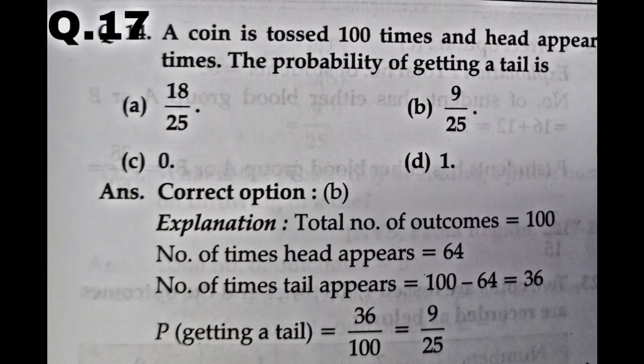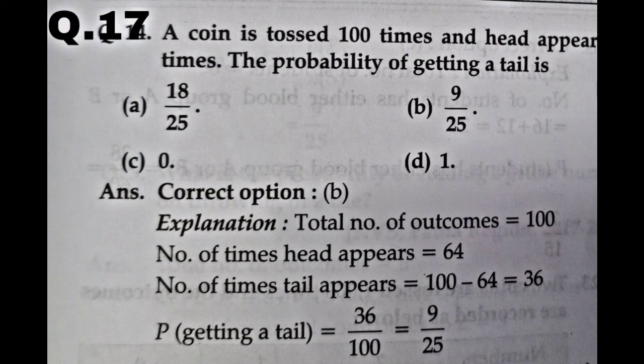Question number 17. A coin is tossed 100 times and head appears 64 times. Find the probability of getting tail. Total outcomes = 100, head appeared 64 times, so tail appeared 100 - 64 = 36 times. Probability of getting tail = 36/100, which simplifies to 9/25. Option B is correct.